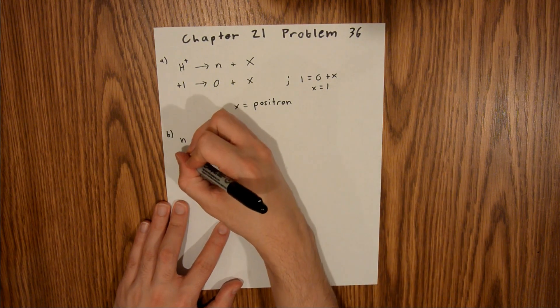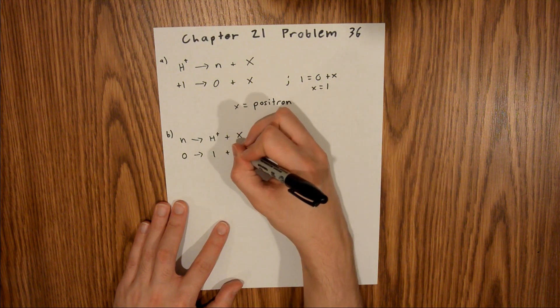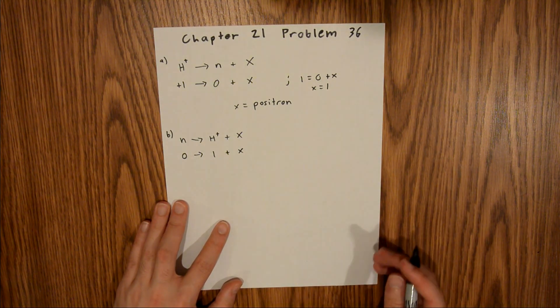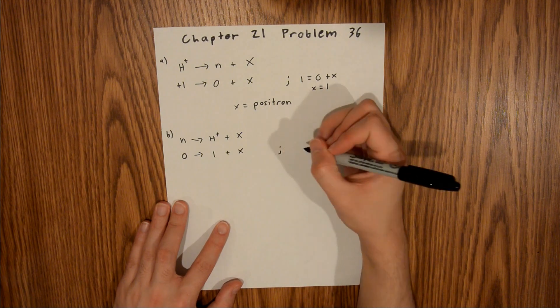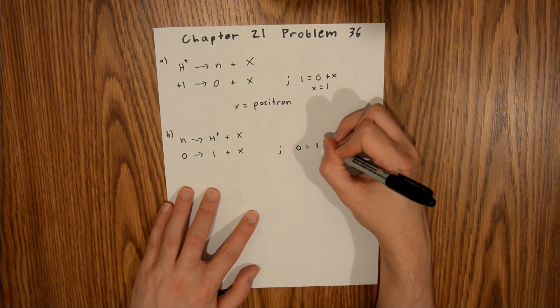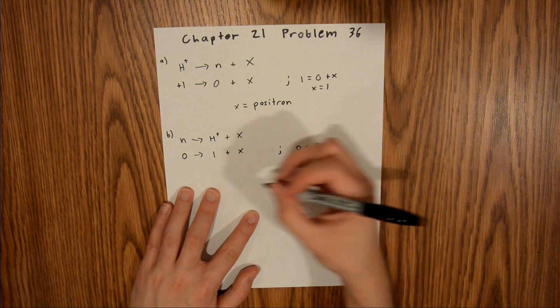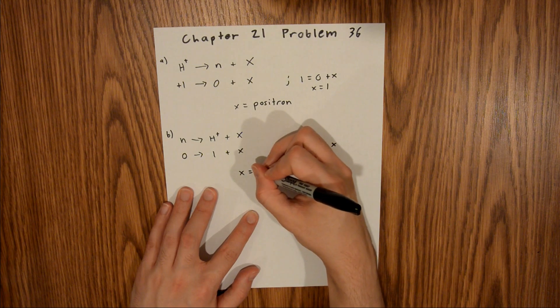Here we have 0, and a proton is a plus 1 charge. We don't know what x is yet, so we'll leave it as an x. We can write that in equation form, and say 0 equals 1 plus x, meaning that x equals negative 1, meaning that x must be an electron,